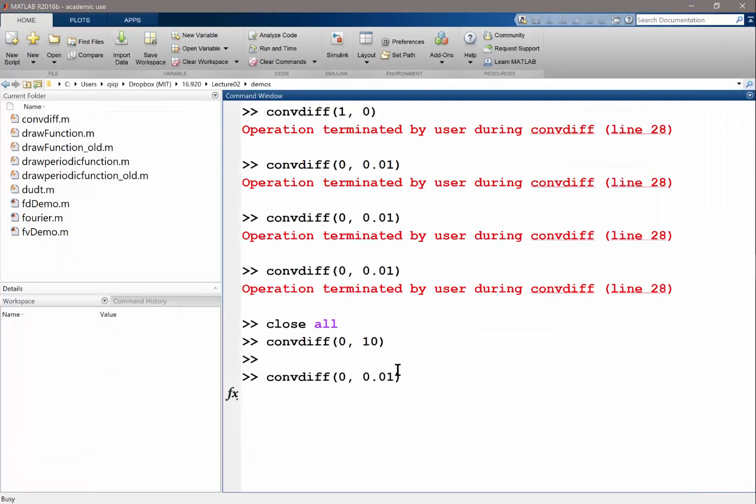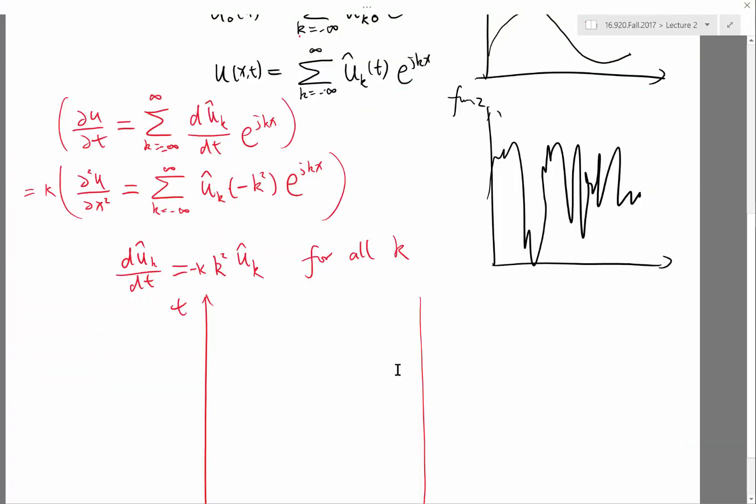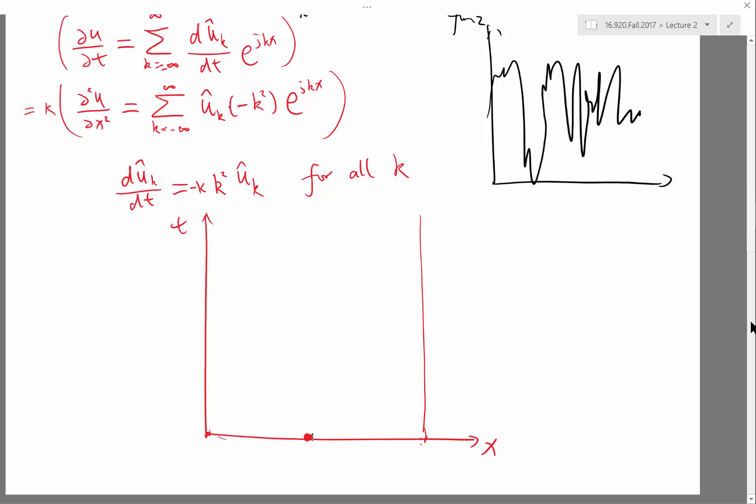If you decompose that very sharp function, if you are able to decompose almost a delta function in Fourier series, what will the Fourier series look like? It's constant, right? So if you transform a delta function into a Fourier series, the Fourier coefficients is going to be as large for larger cases.